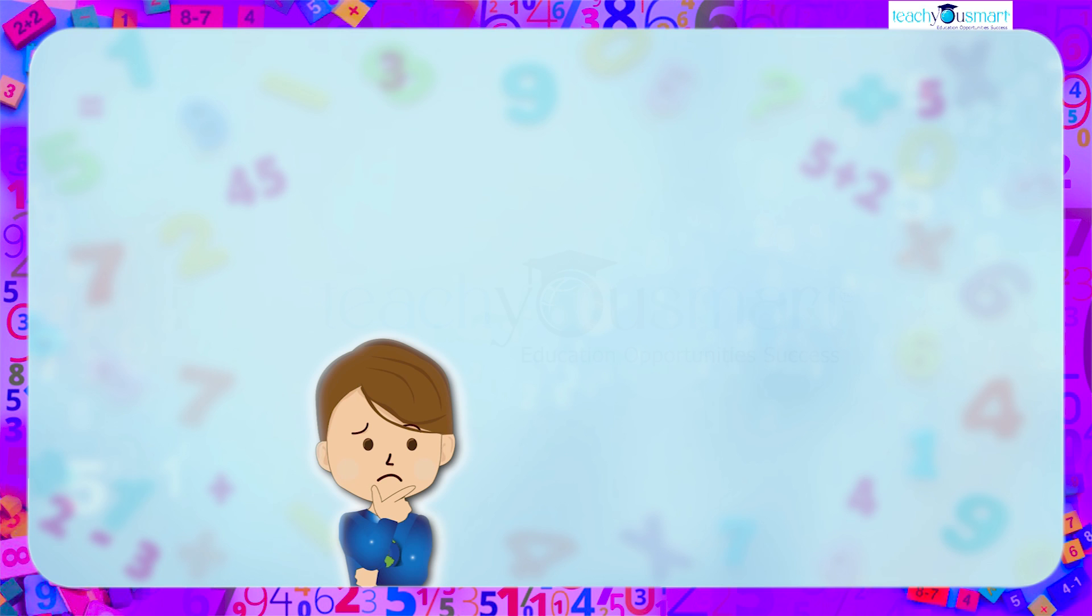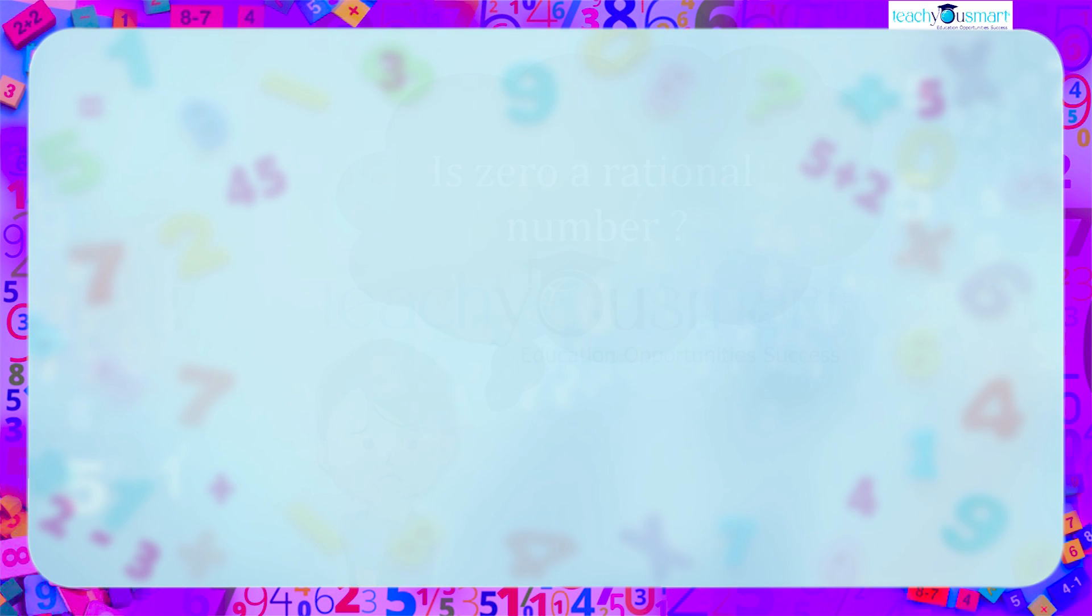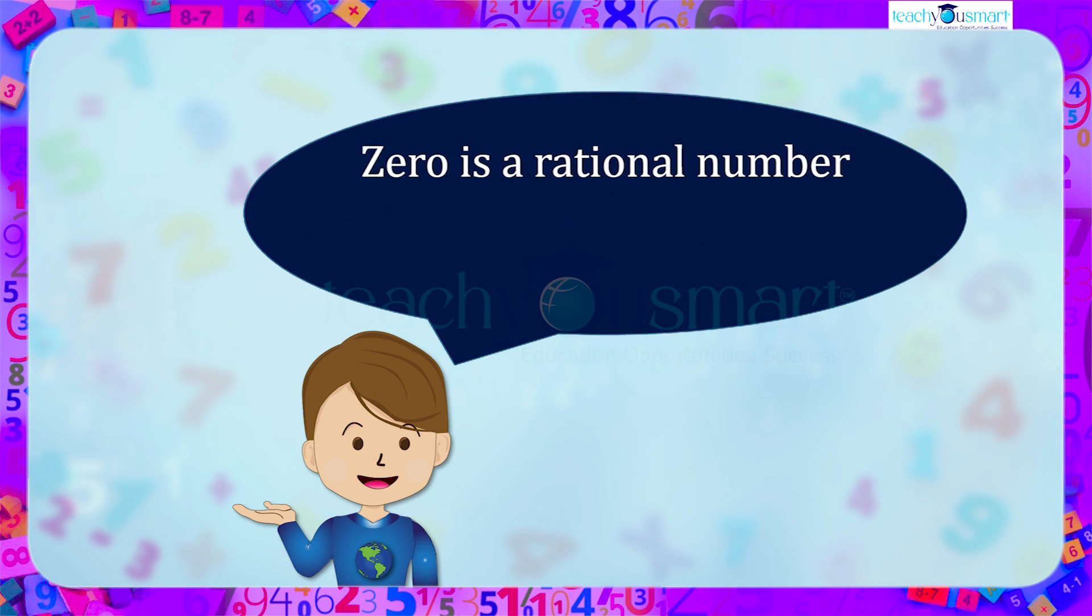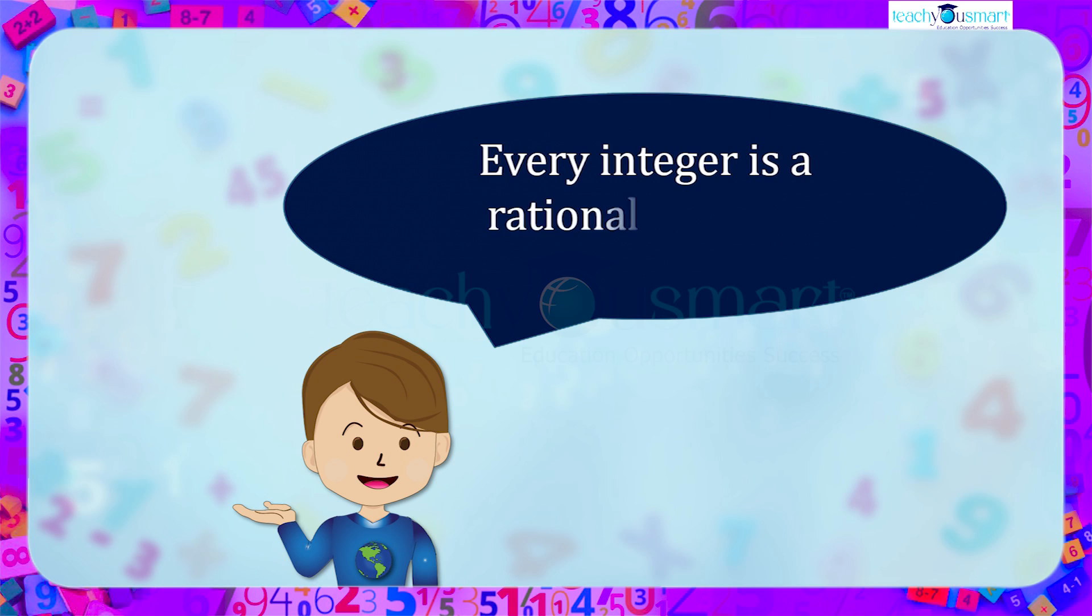Then a question arises: is 0 a rational number? Yes, of course. 0 is also a rational number because 0 can be written as 0 by 1, or 0 by 8, or 0 by any number. So we can conclude that every integer is a rational number.